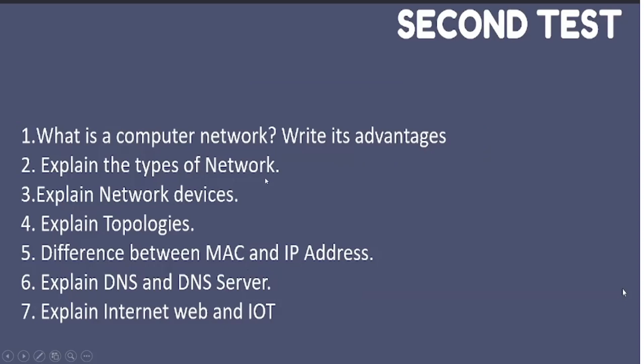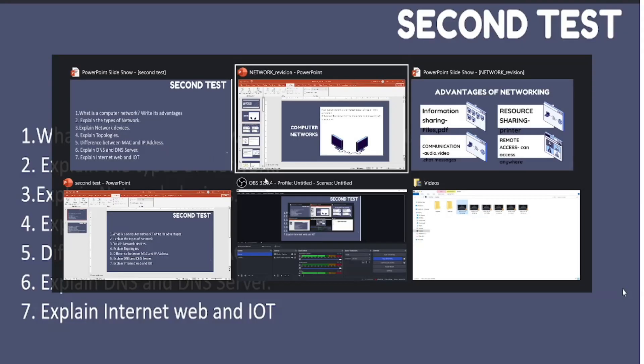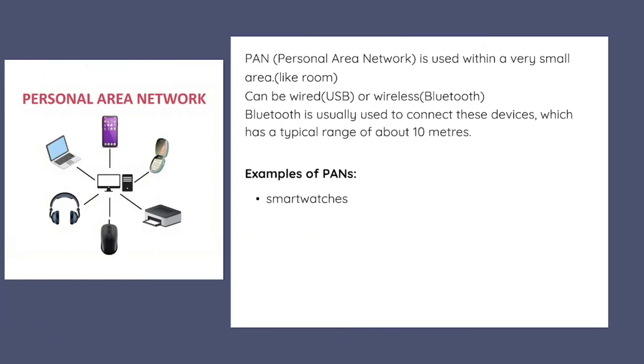The next question is: explain the types of network. This question may come as a two-marker — they may ask any two types, or the difference between LAN and WAN — or as a three-marker. Better to learn all four types. For each type of network, the first point you must mention is the area it covers. For PAN — Personal Area Network — it usually covers a small area like a room.